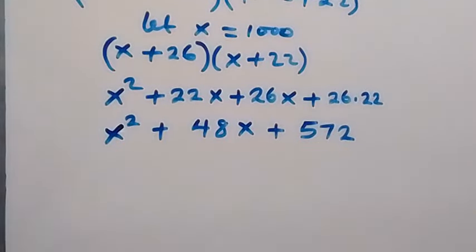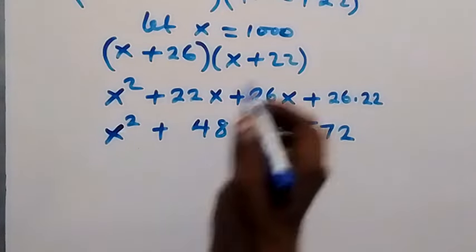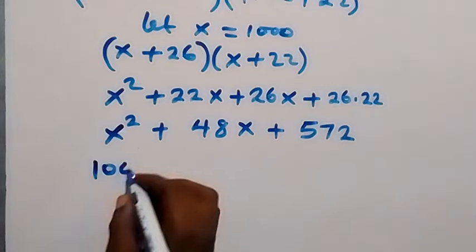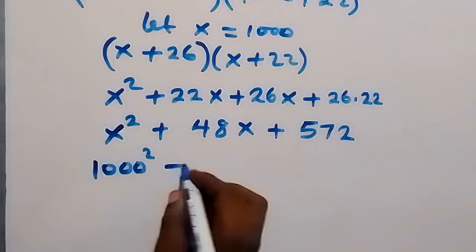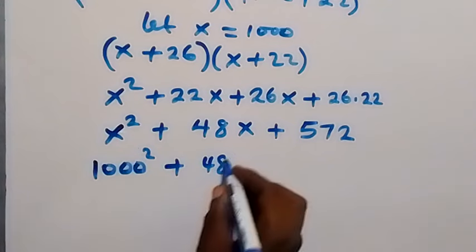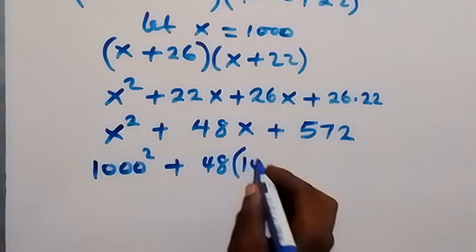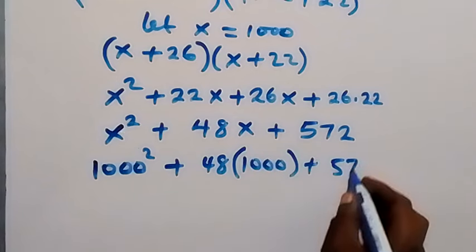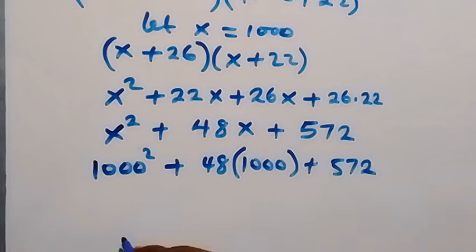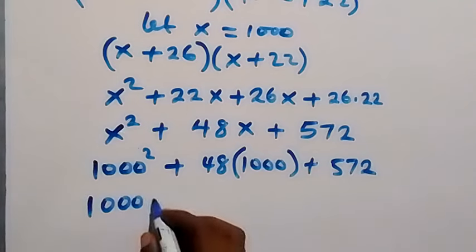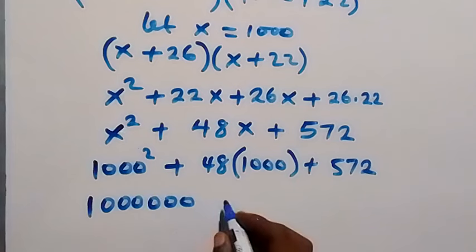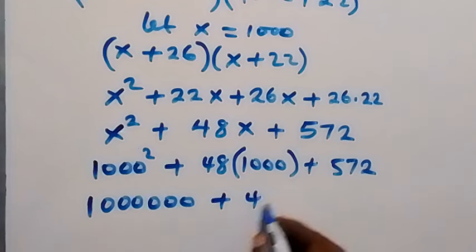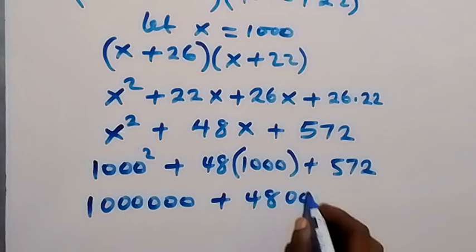In the next step, we substitute the value of x back. That is, x is 1000, so we have 1000 squared plus 48 multiplied by 1000 plus 572.